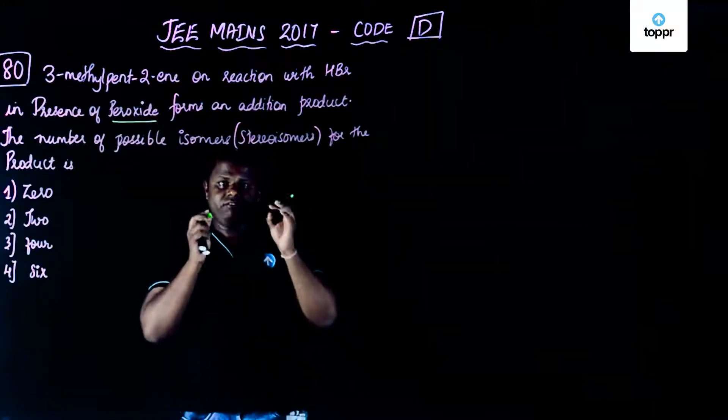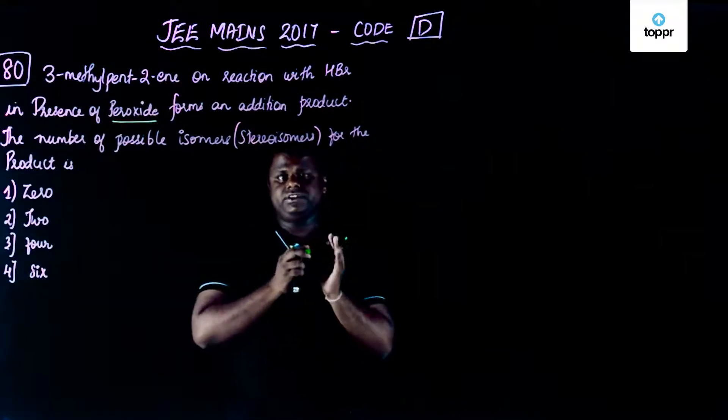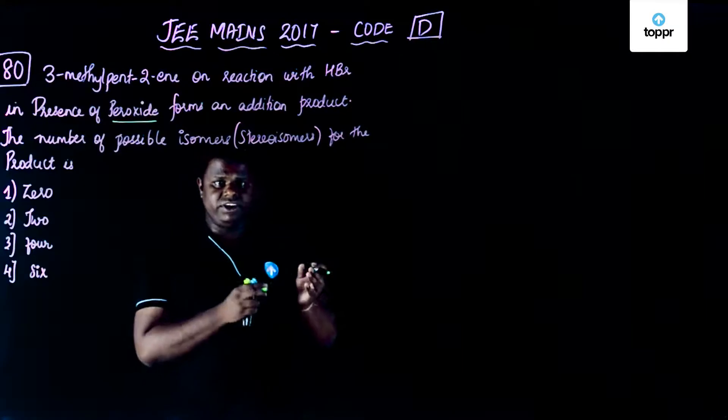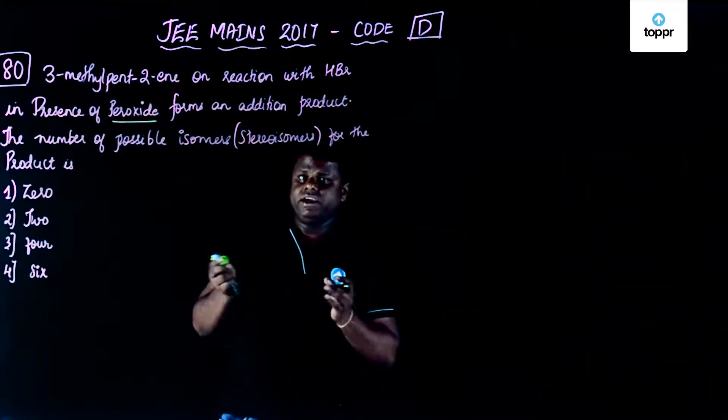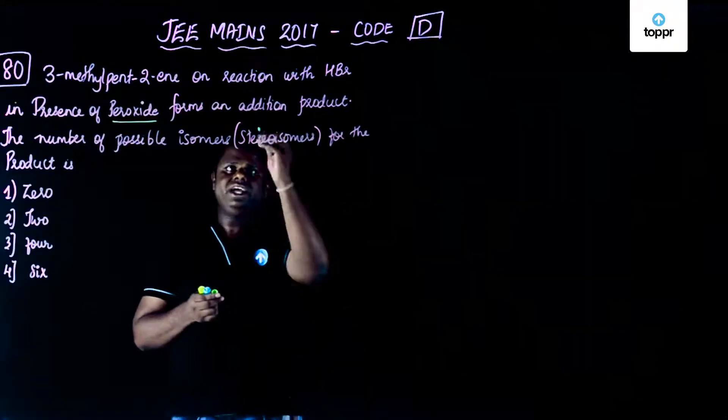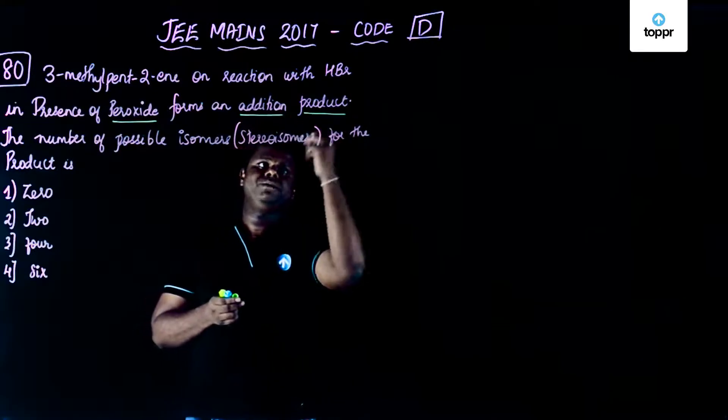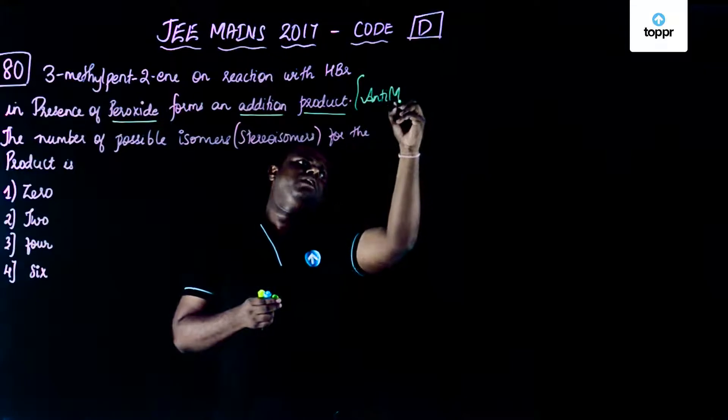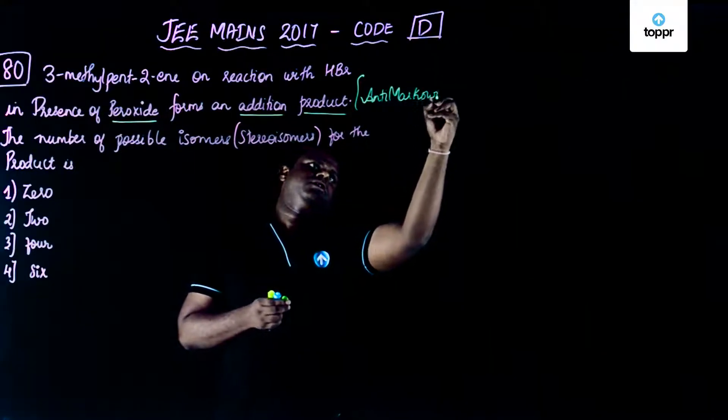So when you talk about peroxide if it is an addition, if it's an addition product then you would go for Kharash rule or Kharash effect or anti-Markonikov's effect which is also called as peroxide effect. So it is already given that it forms an addition product that means you are expected to follow the anti-Markonikov's rule.